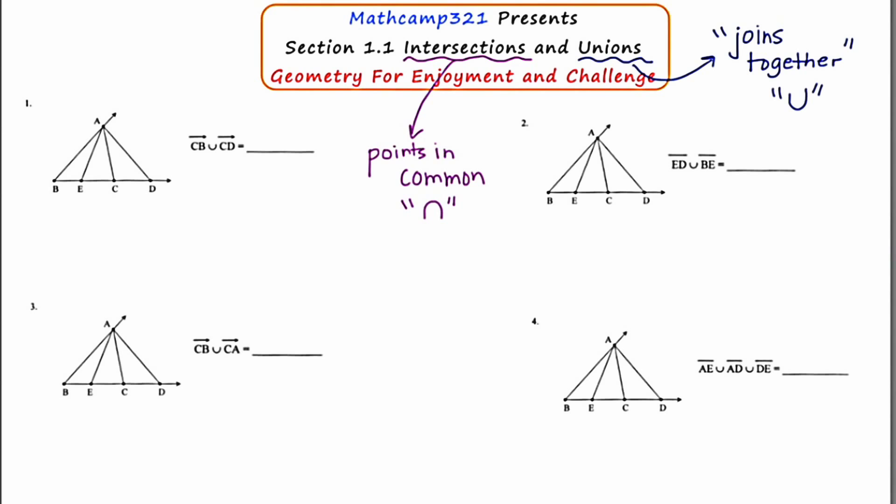So number one, they want us to find the union of Ray CB. So that means start at C and go in the direction of B. And we're going to join that with Ray CD. So that means start at C and go in the direction of D forever. Now if I look at both of these colors, the blue and the green, and I join them together, what I'm left with is a straight line.